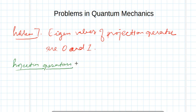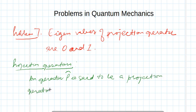An operator P is said to be a projection operator if it is Hermitian and equal to its own square. This is the definition of this operator.